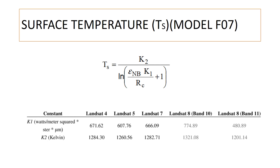Surface temperature is computed using model F07 with the following formula: K2 divided by the natural log of (narrow band emissivity multiplied by K1 divided by RC, plus 1), where K2 = 1321 and K1 = 774.89 are constants for Landsat 8, and RC is the corrected thermal radiance computed in the previous step. Since we already computed RC and the emissivity, and these are known constants, surface temperature is straightforward to calculate.